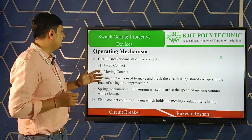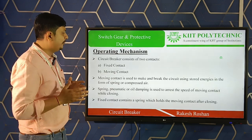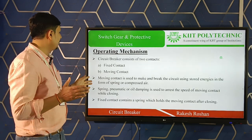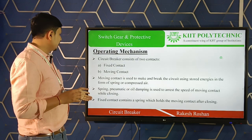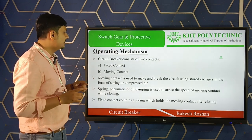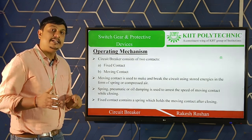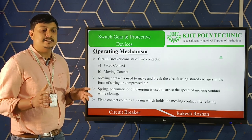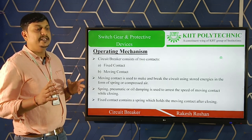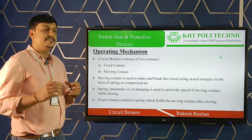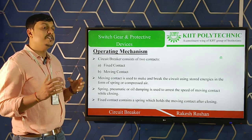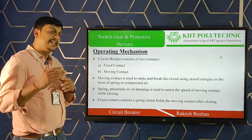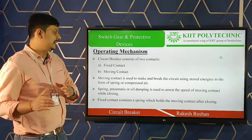A spring and pneumatic oil damping is used to control the speed of the moving contact while closing. The fixed contacts contain a spring whose function is to hold the moving contact in place during normal conditions.